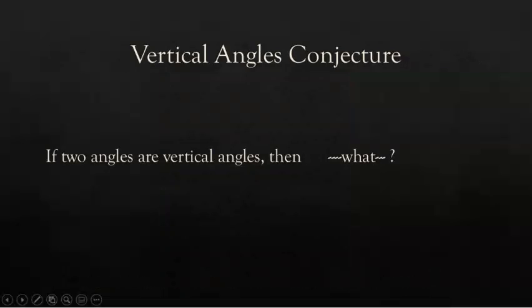So your vertical angles conjecture should start out with: if two angles are vertical angles, then what? What did you find? It should read something like, if two angles are vertical angles, then their measures are the same, or then they are congruent angles. You should have found when you folded them on top of each other, they matched up exactly. Those angles would measure the same.